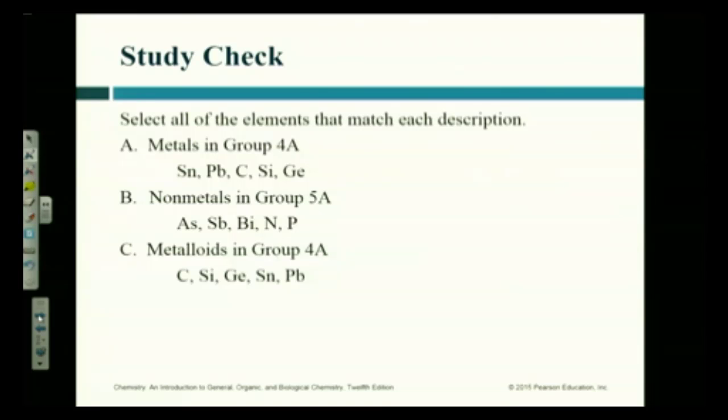Non-metals in Group 5A. Is arsenic a non-metal? No, it's a metalloid. What about SB, antimony? It's a metalloid as well. BI is bismuth. It's a metal. What about N? Nitrogen. Is a non-metal. P is for phosphorus. Non-metal as well.